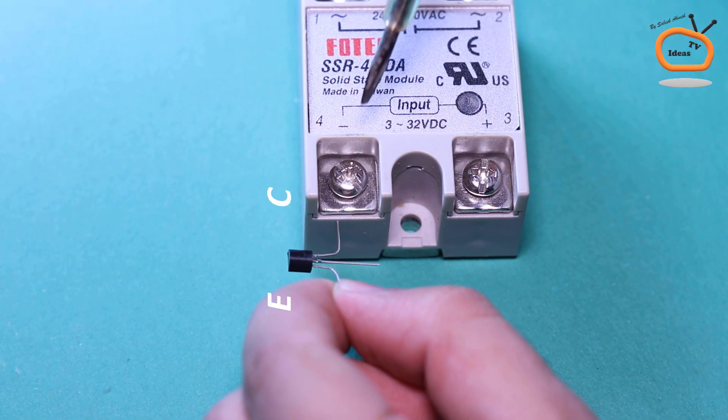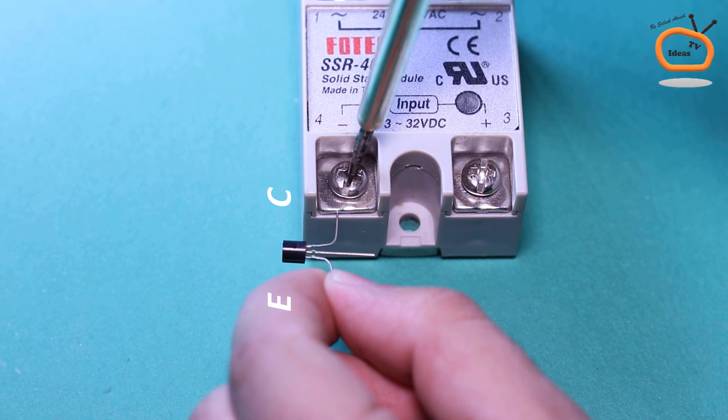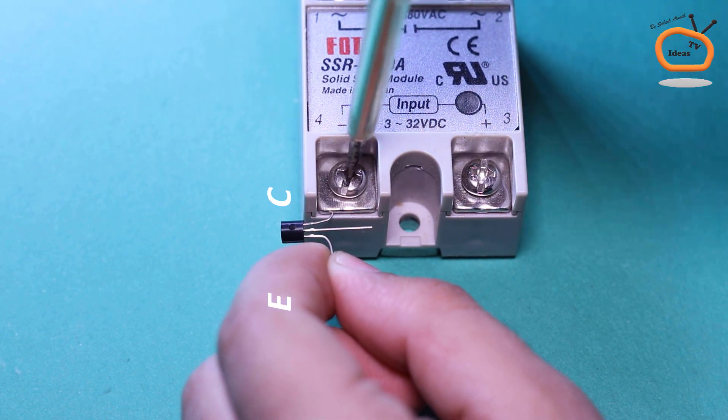In the first step, connect the collector pin of transistor to the negative terminal of solid-state relay.